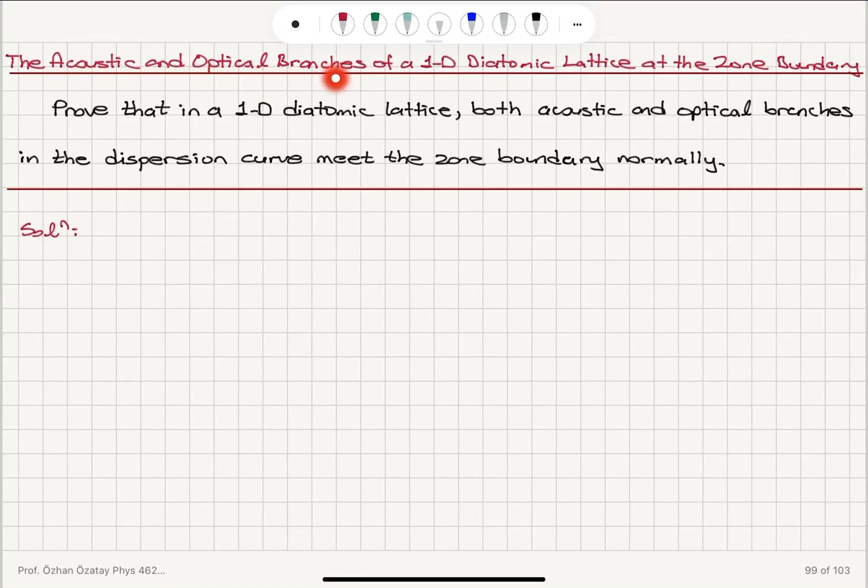The acoustic and optical branches of a 1D diatomic lattice at the zone boundary. Prove that in a one-dimensional diatomic lattice, both acoustic and optical branches in the dispersion curve meet the zone boundary normally.